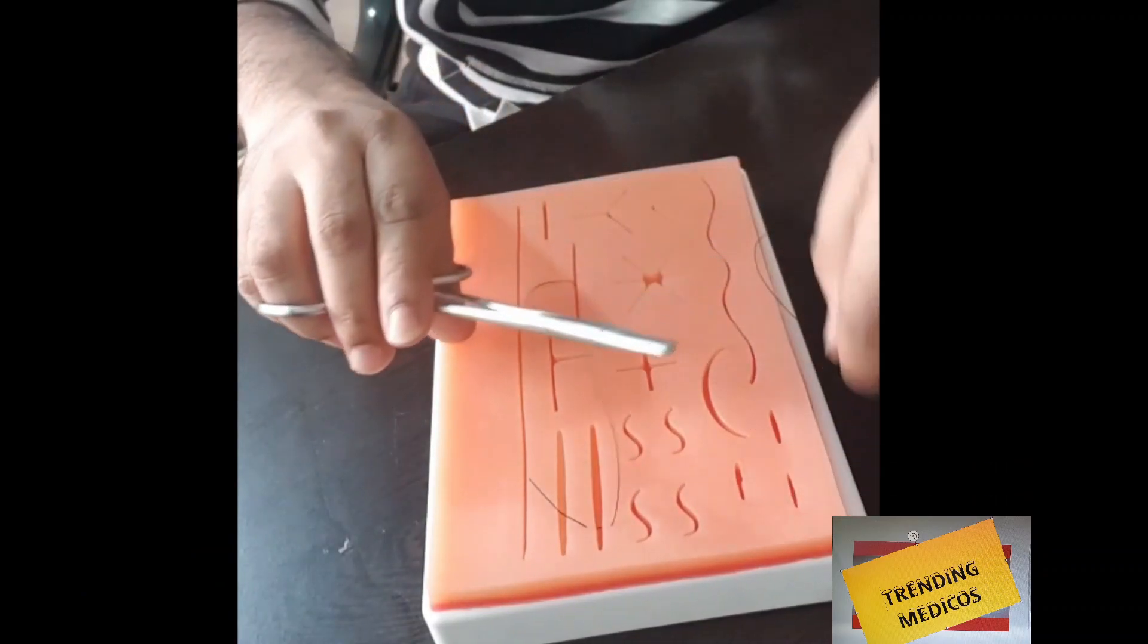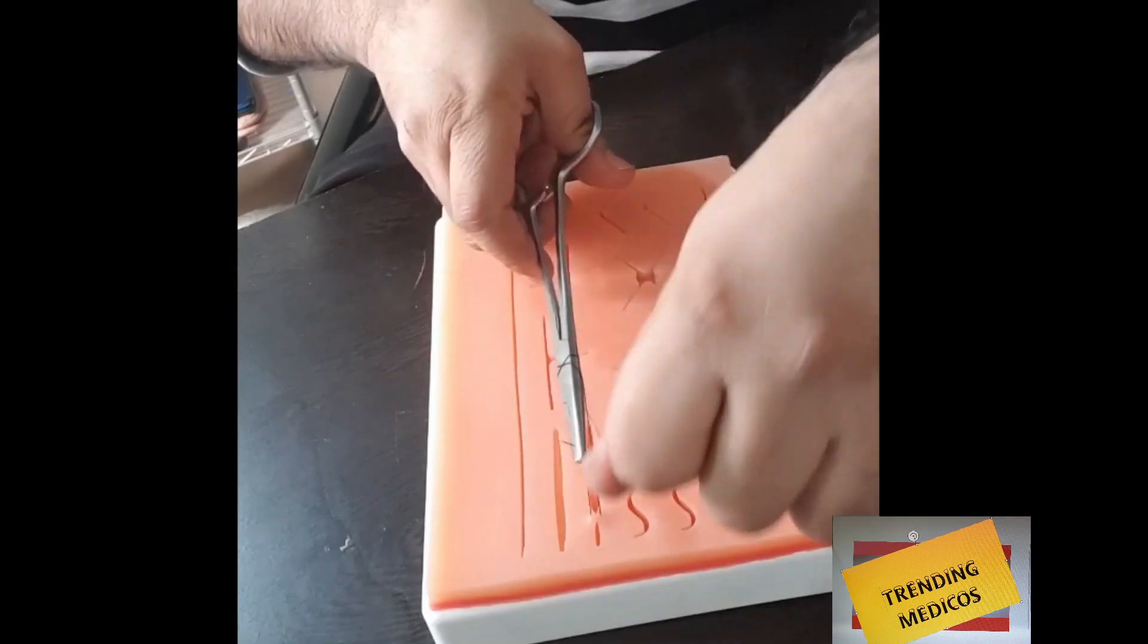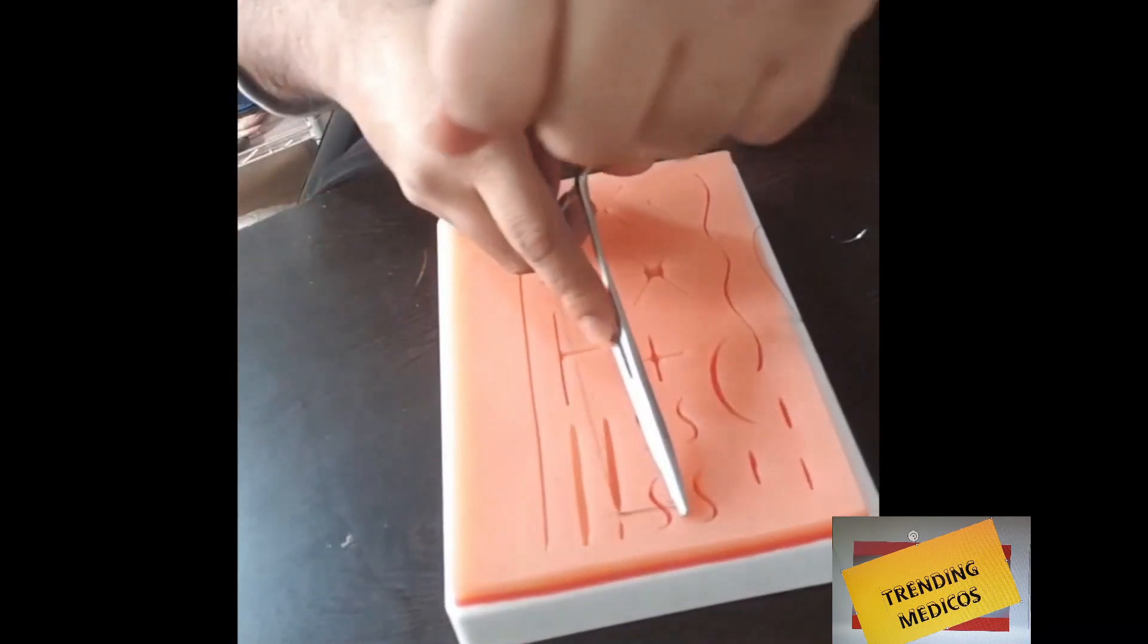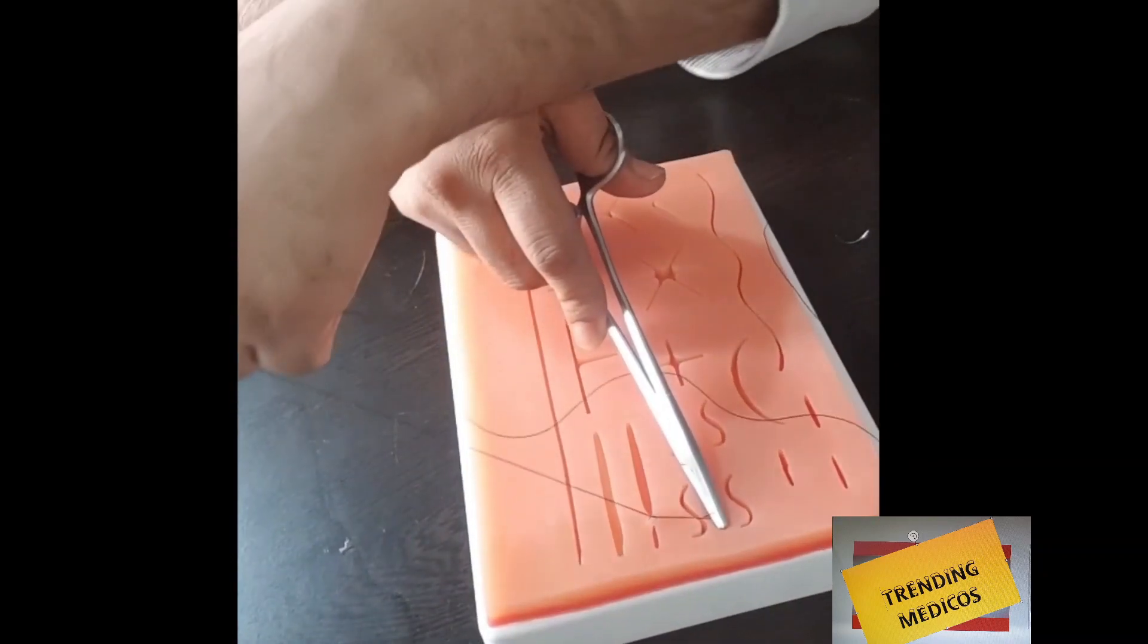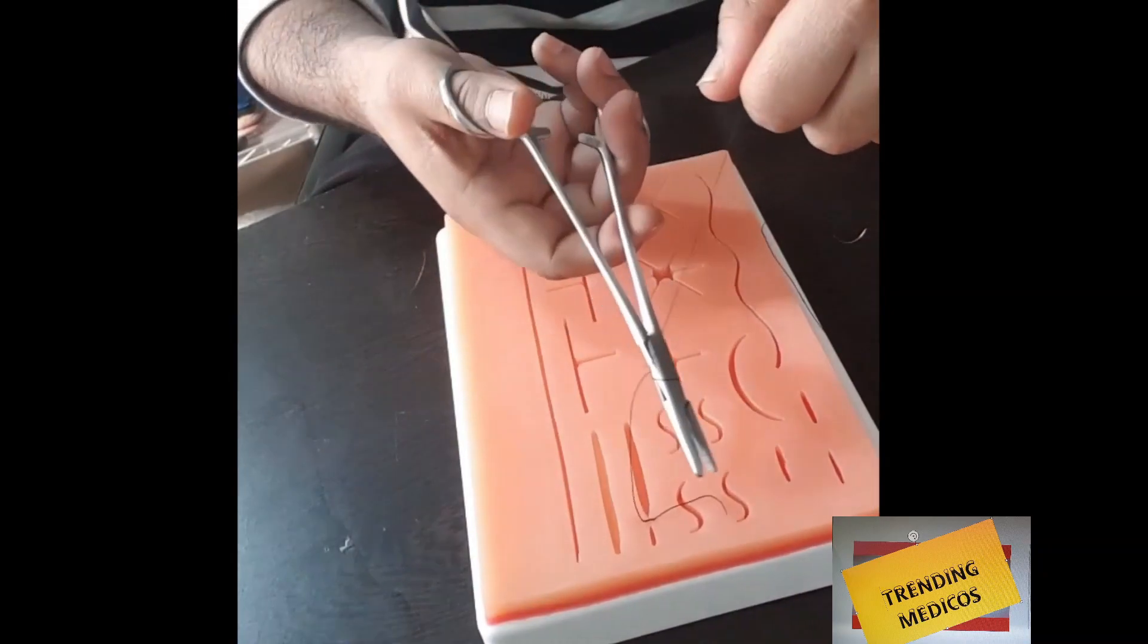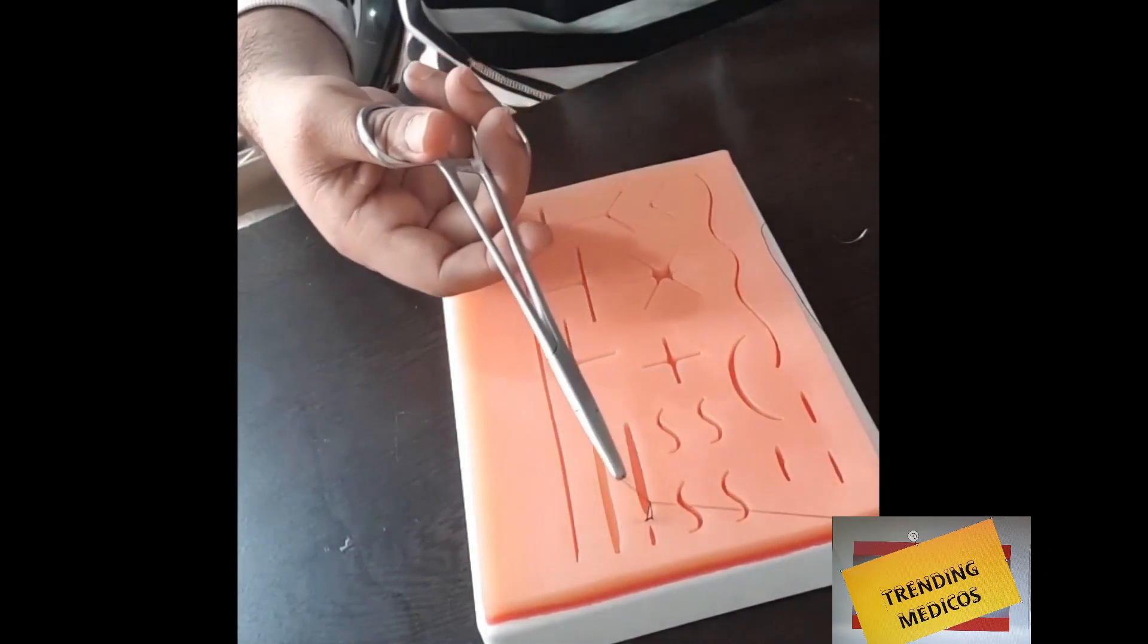Take a loop inside the C shape, then cross. Again, make a loop inside the reverse C, hold the smaller end of the suture, then cross again.